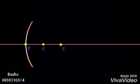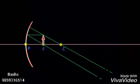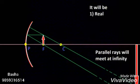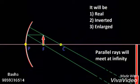Case 6: When the object is at F, we select two rays — one parallel to the principal axis and another passing through the center of curvature. After reflection, the rays become parallel. Parallel rays meet at infinity, so the image is formed at infinity. It will be a real, inverted, and enlarged image — much, much larger in size than the object.